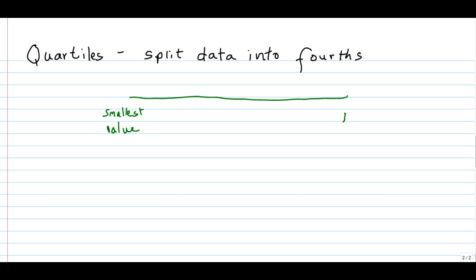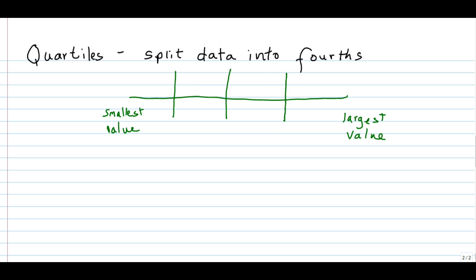Let's take a look. Here's the data from the smallest number to the largest. If we split the data in half with 50% on one side and 50% on the other side, we just need one number — the median. To split the data into four parts, we would split each of the halves in half to get quarters, and we need three numbers. Now each section represents 25% of the data values.